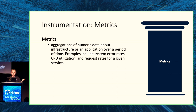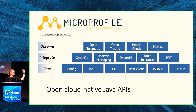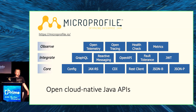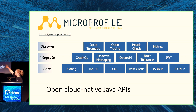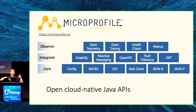A really great tool for implementing metrics is MicroProfile. This is a community-driven specification designed to help anyone using Java or Jakarta EE applications build them effectively for the cloud. It offers add-on APIs and specifications categorized into three groups: core APIs at the bottom, integration APIs in the middle, and observability APIs on top. Many core APIs are shared with Jakarta EE — things like JAX-RS, JSON-B, and JSON-P — and the two communities work quite closely together.